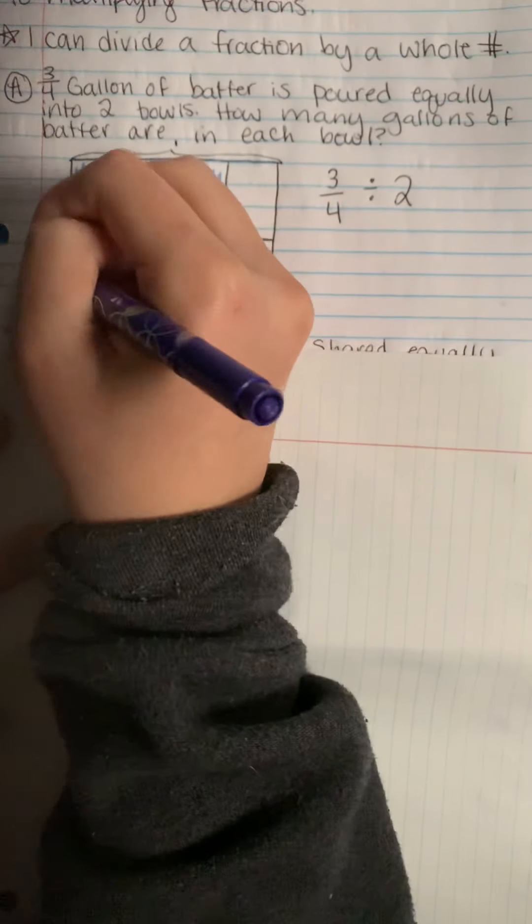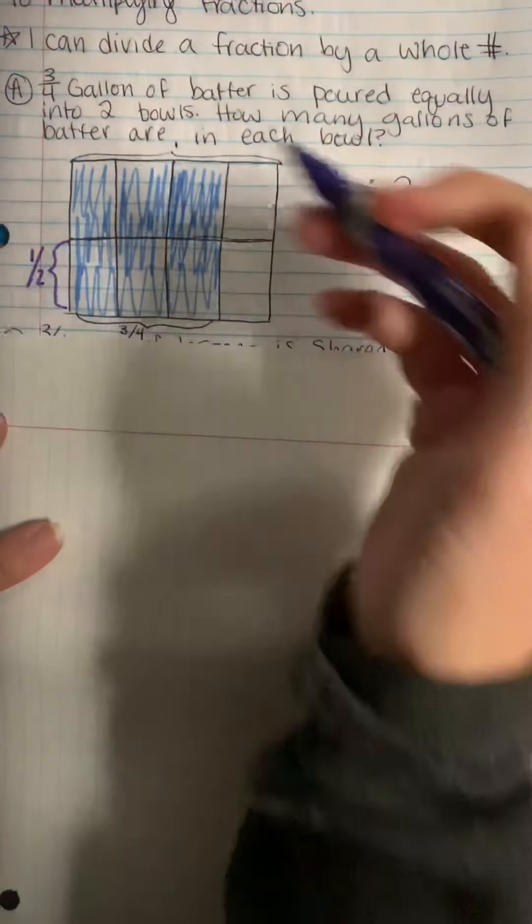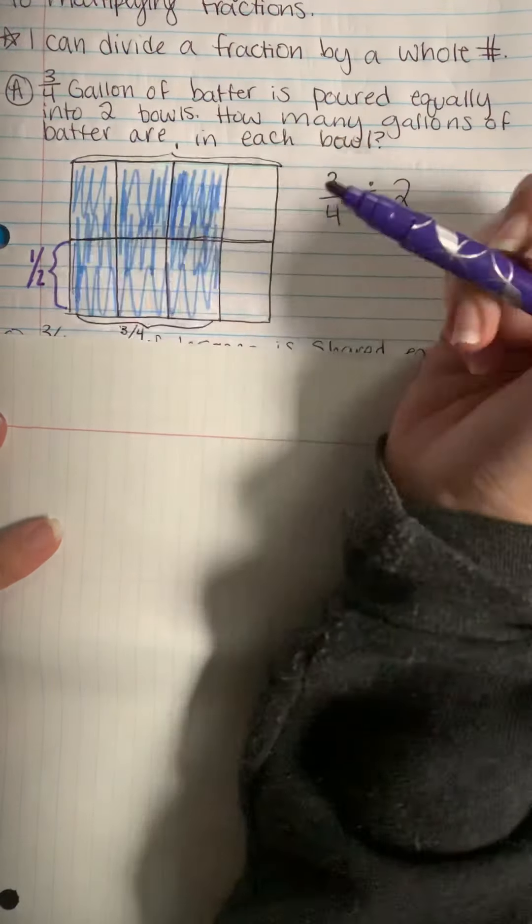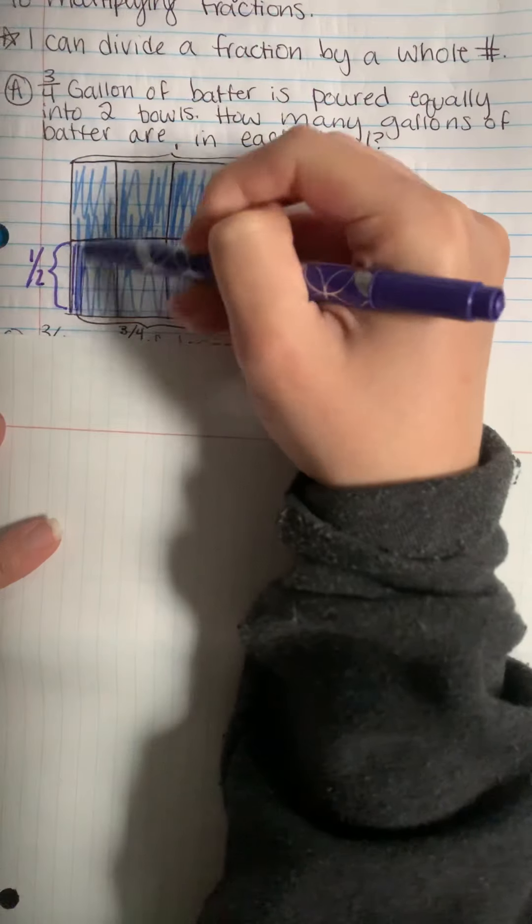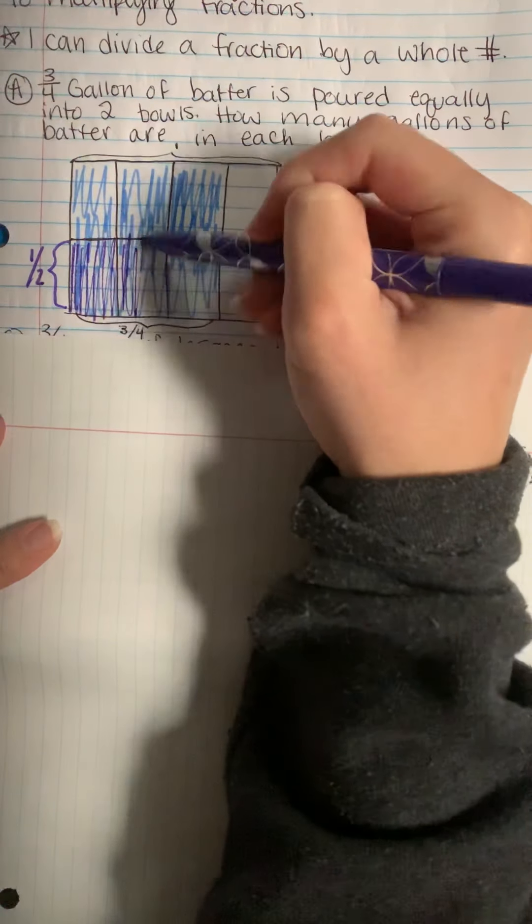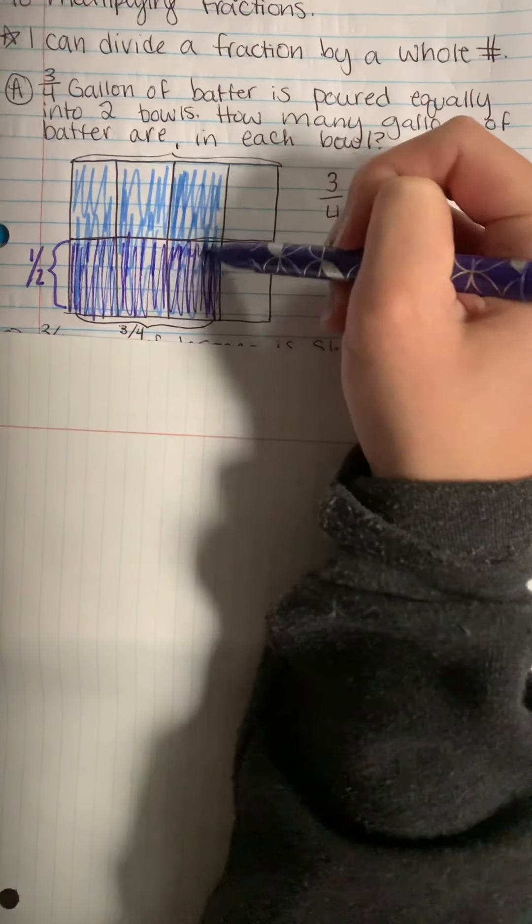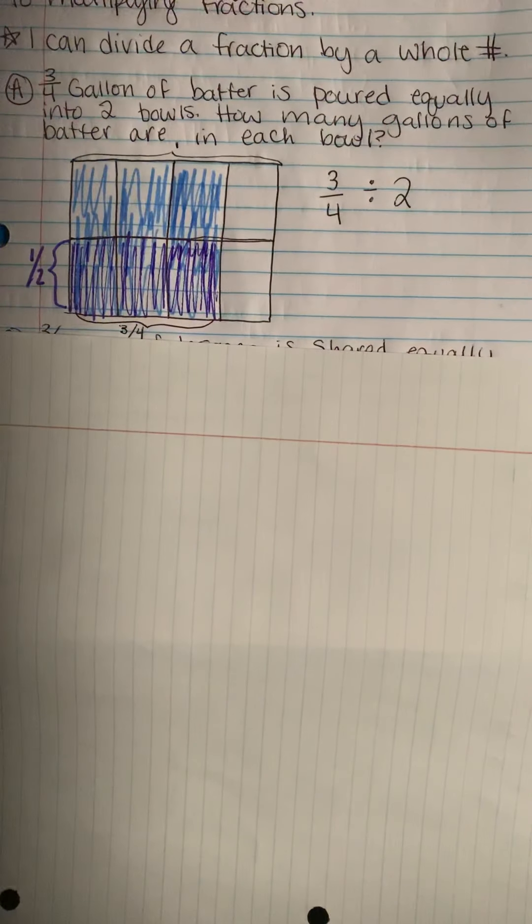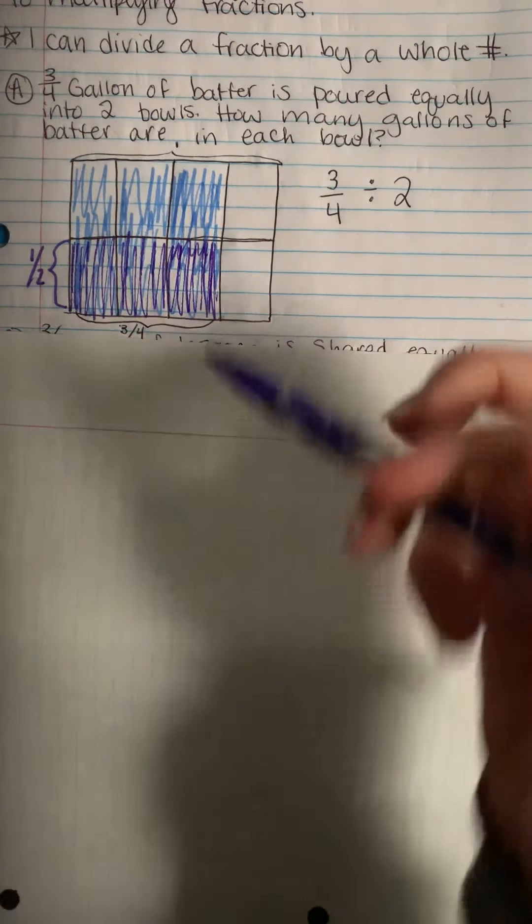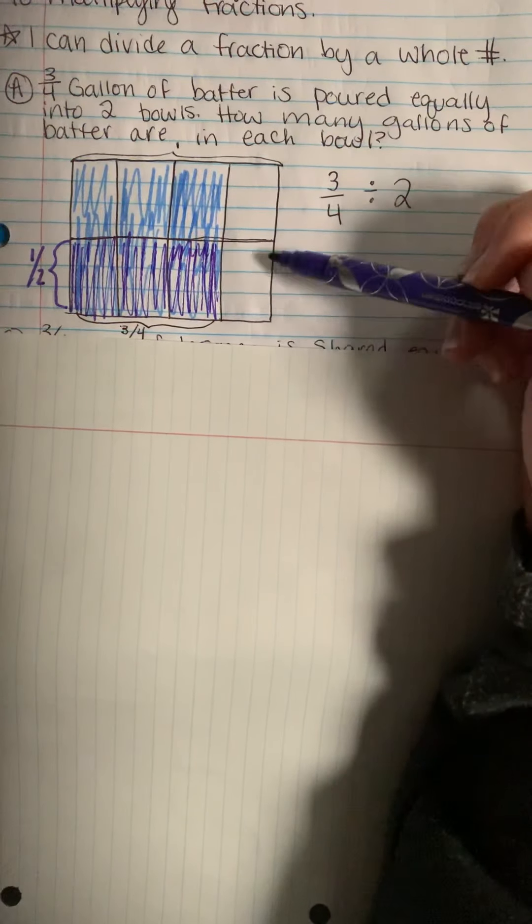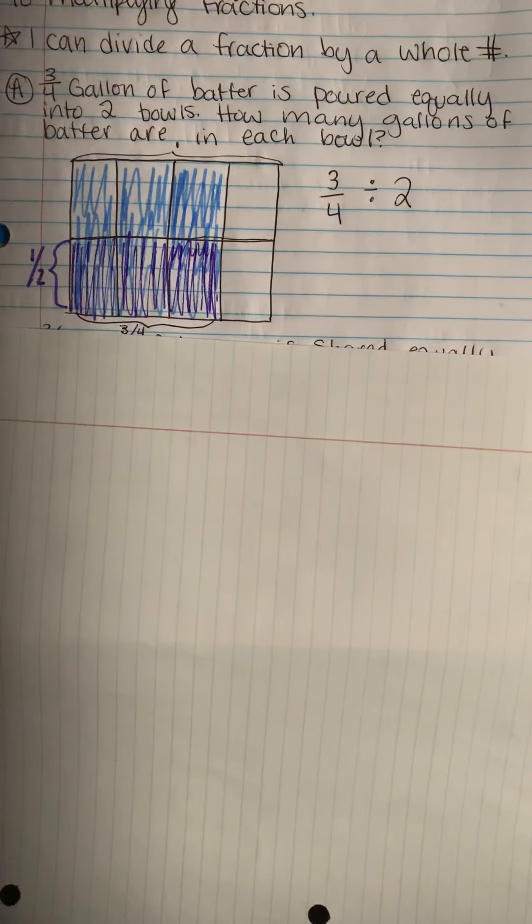Now our model shows three-fourths being partitioned into those two equal parts. One half is what I need to shade in here because I want to know how much is in each bowl. So in one bowl, therefore I'm only looking at one half.